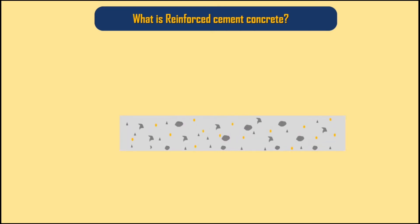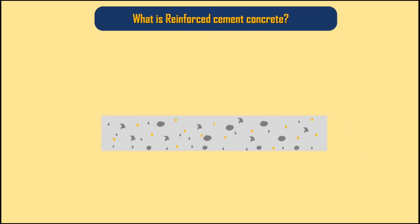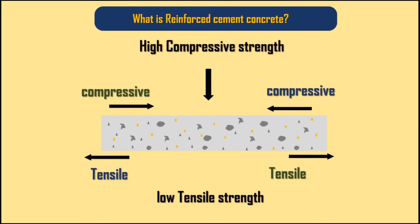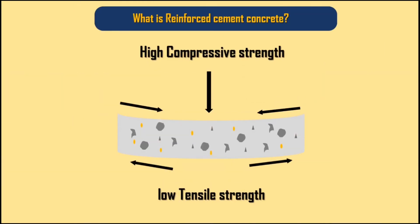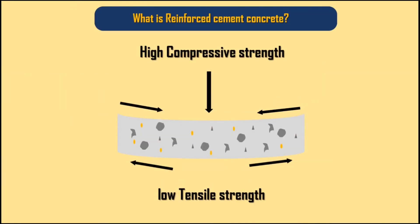Plain concrete is strong in compression, but it is weak in bending. When a plain concrete member is subjected to bending, it develops cracks and ruptures. For this reason, plain concrete is not used where bending action can occur.